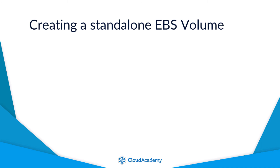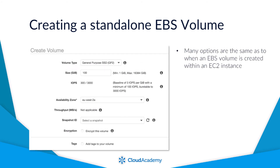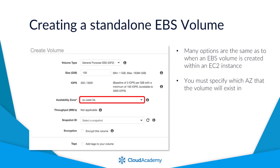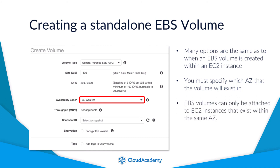You can also create the EBS volume as a standalone volume. By selecting the volume option under EBS from within the EC2 dashboard of the management console, you can create a new EBS volume. Here you will have many of the same options, however you can specify which availability zone the volume will exist in, allowing you to attach it to any EC2 instance within that same availability zone. Remember, EBS volumes can only be attached to EC2 instances that exist within the same availability zone.